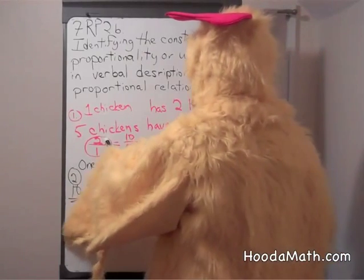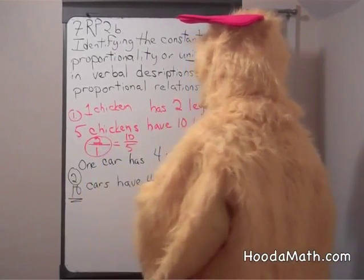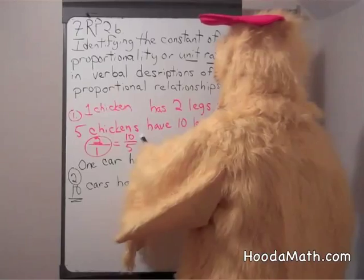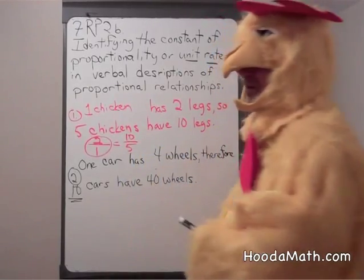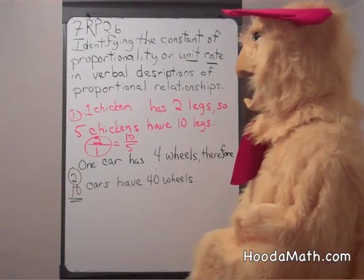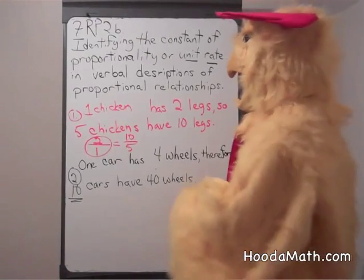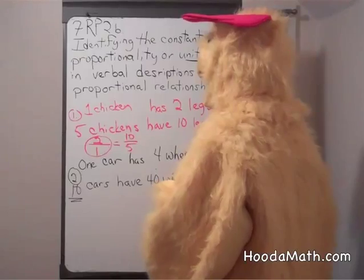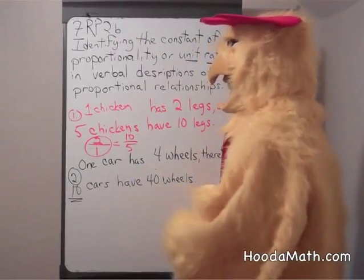The proportion is two legs per one chicken, or ten legs per five chickens. These are proportional ratios, or fractions, because two divided by one is two, and ten divided by five is also two.